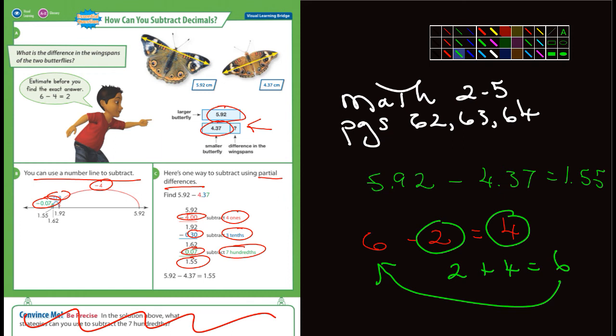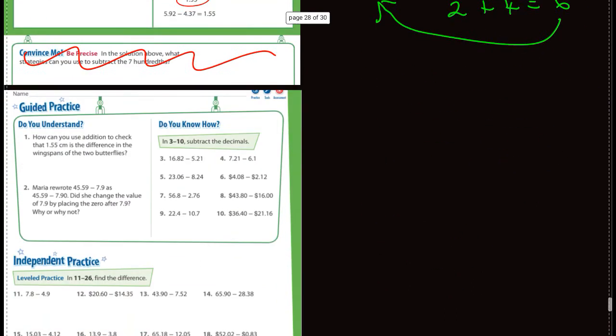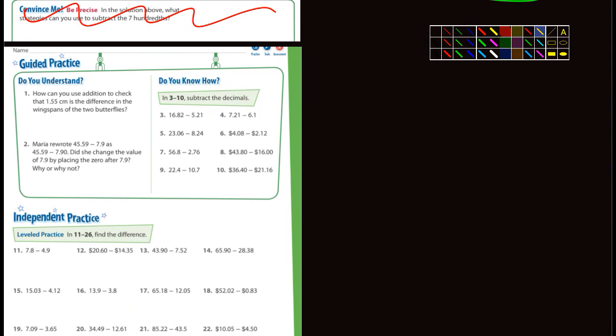So the same thing can be applied here. What if I add 4.37 and 1.55? What do I get? I'll get 5.92. So let's go back to this problem here—you can write it any way you want, but you're going to be adding.